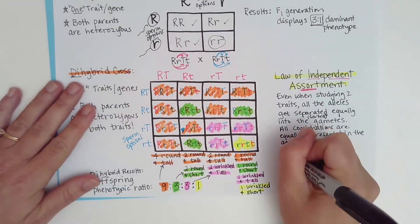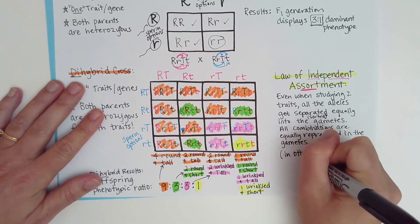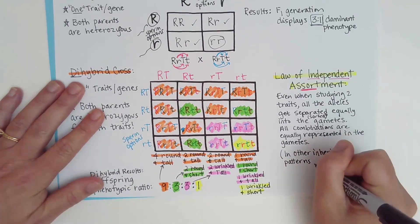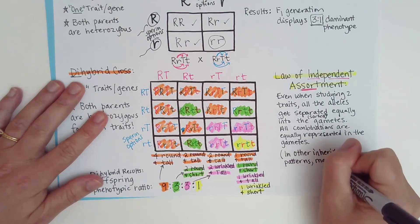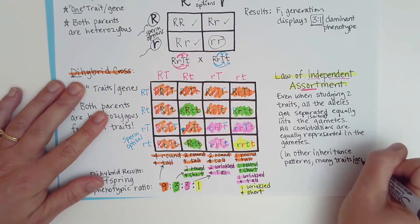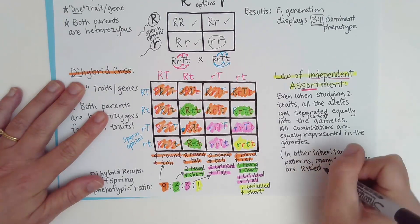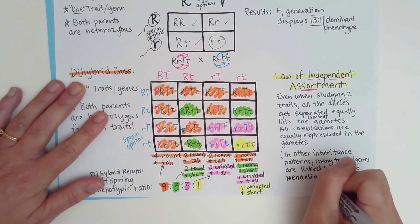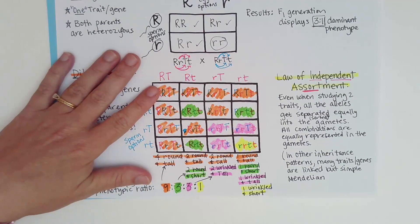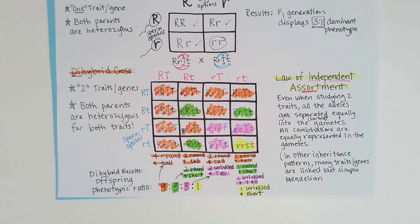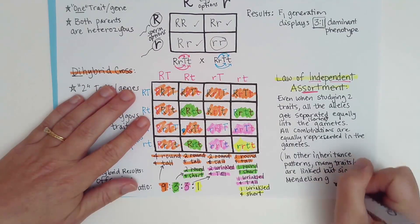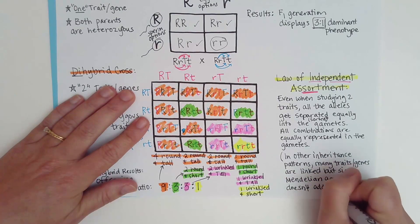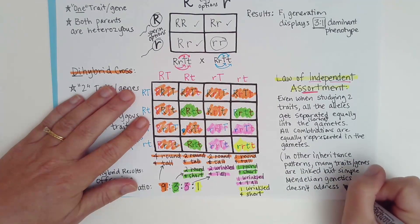The last thing I want to mention is that in other inheritance patterns that are non-Mendelian, there are linkages of traits — but simple Mendelian genetics does not address this. If you're a student of biology, you first learn simple Mendelian genetics and then after that you start learning more complex patterns of inheritance.